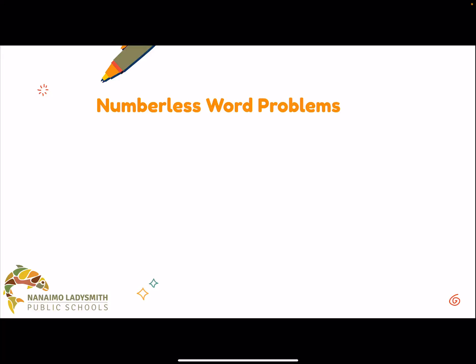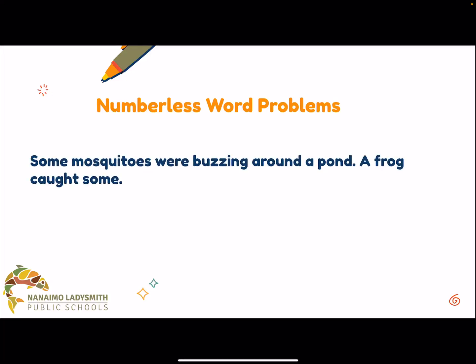In a numberless word problem, we're slowly revealing information in a problem. In this problem here, it says: some mosquitoes were buzzing around a pond, a frog caught some. You'll notice that there are no numerical values. All we're doing is building an understanding about what's happening with these mosquitoes, a pond, and a frog. At this point, we can even start to have students draw the scenario out.